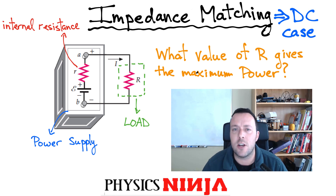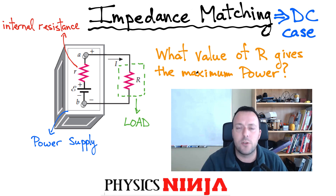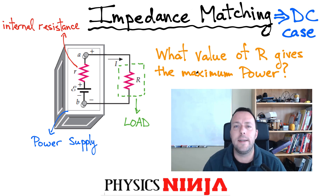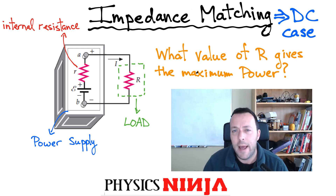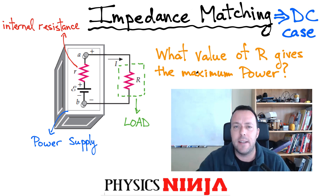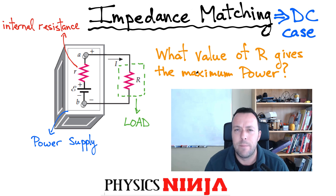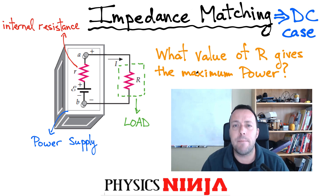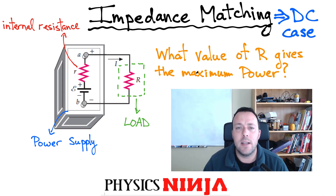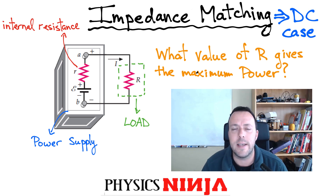We're going to start by writing down Kirchhoff's loop rule for this problem and look at the power equation being dissipated by the load resistance. It might not be what you think it is, and at the end we're going to try some numerical values with examples to illustrate what we've covered.